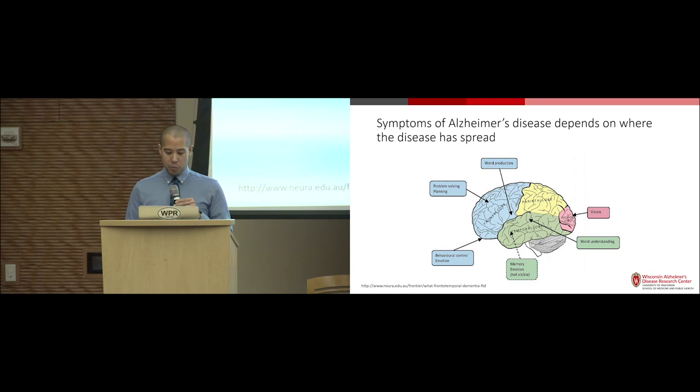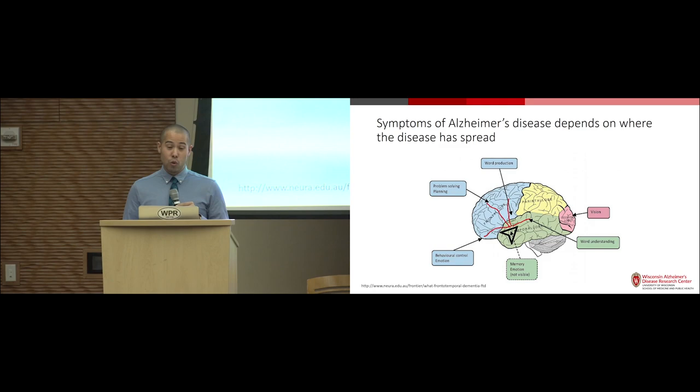In general, Alzheimer's starts in the memory center, the hippocampus, but from there how it spreads can vary. If it spreads to the front part of the brain, a person will have problems with problem solving and planning. If it spreads to the language center, a person will report word finding or difficulty understanding words. In less common cases, it can spread to the vision center or the behavioral control center, causing agitation or social inappropriateness.